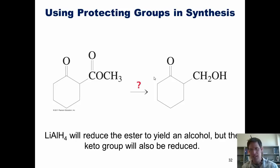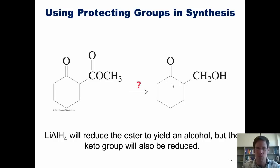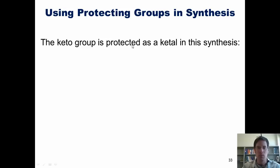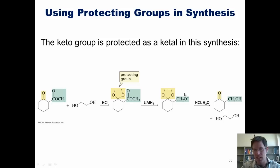We now turn to using protecting groups in total synthesis. Lithium aluminum hydride reduces both esters and ketones, so if I wanted to convert a starting material with both functional groups into a product where only the ester is reduced while the ketone is left untouched, I have to protect the ketone. The ketone is protected as a ketal: treat the starting material with ethane diol and catalytic acid, converting the ketone into a ketal. Then treat with lithium aluminum hydride, which reduces only the ester down to the primary alcohol via two successive hydrides. The acid then hydrolyzes and removes the protecting group to give back the ketone.